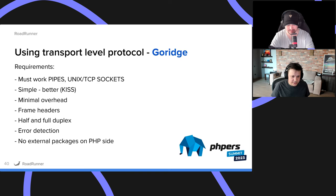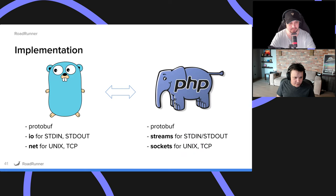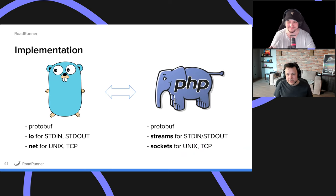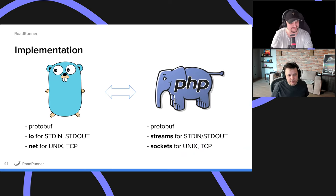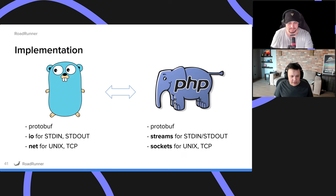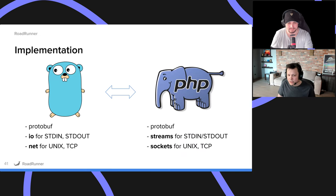We built a protocol allowing us to exchange payloads between PHP and Golang in both directions, and built the rest on top of this protocol. We use protobuf as the serialization protocol — in some older plugins or versions we used JSON. To implement it, you just need standard libraries: IO and net for Golang, and streams and sockets for PHP. No magic required, no extensions required — all of this code comes out of the box.